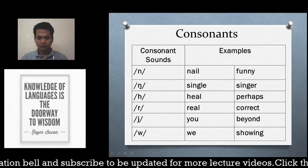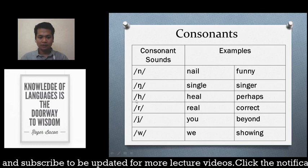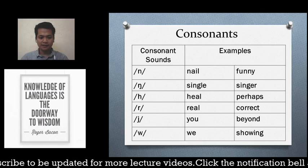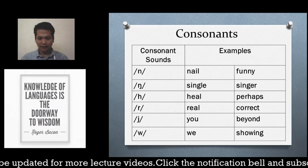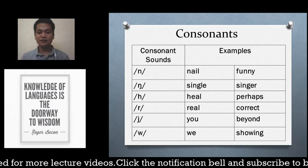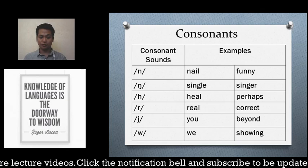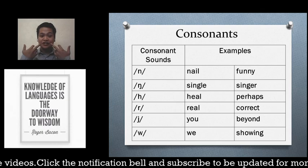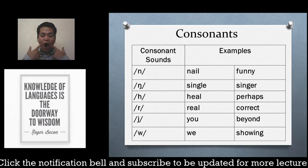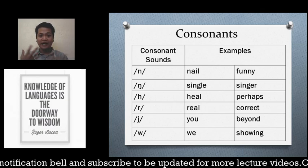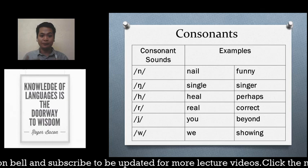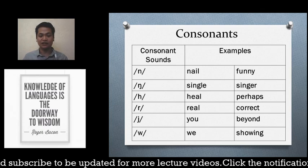To practice consonant and vowel sounds, you can do exercises at home. For example, exaggerate mouth movements: say 'me–oh, me–oh, me–oh' repeatedly to exercise your jaw and other articulators. This makes it easier to produce the sounds of English.